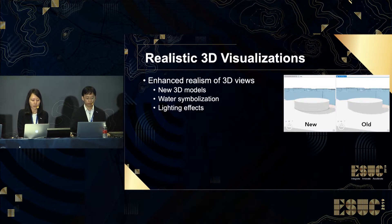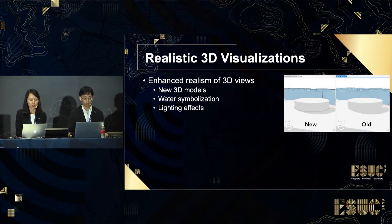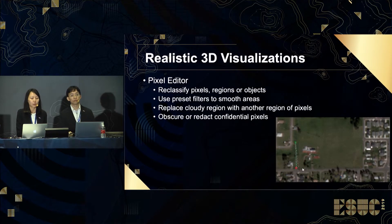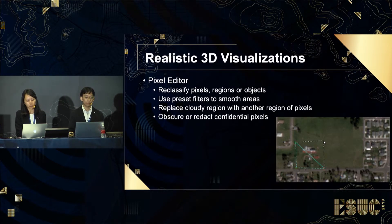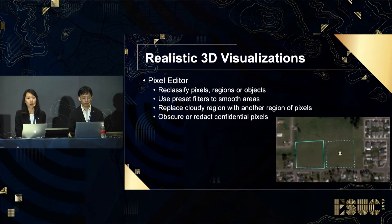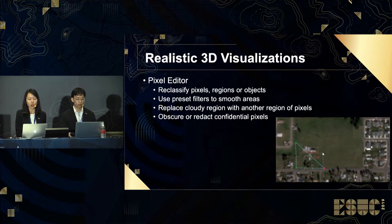In one of the latest updates of ArcGIS Pro, many new tools have been included with enhancements to the realism of 3D views. There are new 3D models, water symbolization which simulates water of different wave directions and colors, and lighting effects which increase depth perception by using shadows. The Pixel Editor is a new tool to interactively manipulate pixel values for raster and imagery data. It allows you to edit an individual pixel or groups of pixels, reclassify your pixels, regions, or objects, and using preset filters you can smooth out areas to improve the quality of your images.